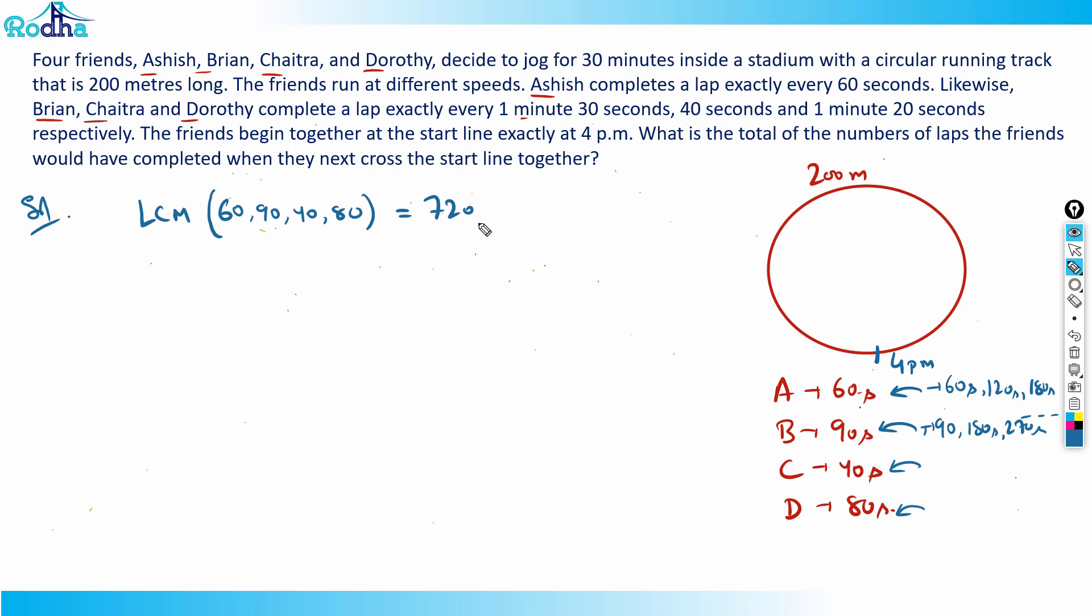The LCM will be equal to 720 seconds. Let me calculate: 40 and 80, the LCM is 80. 90 and 60, the LCM is 180. Now for 180 and 80, both are multiples of 20. This is 20 times 9 and this is 20 times 4. The LCM of 9 and 4 is 36, so 20 times 36 equals 720.